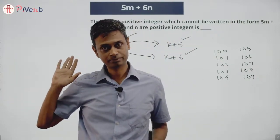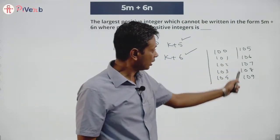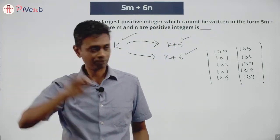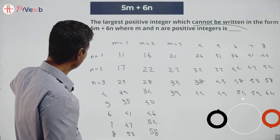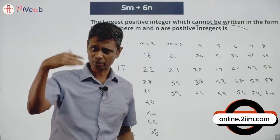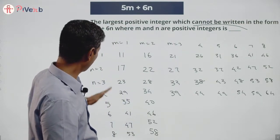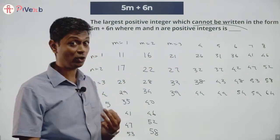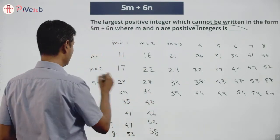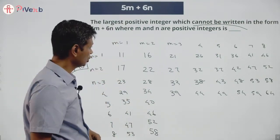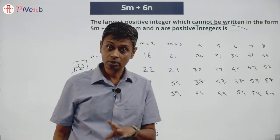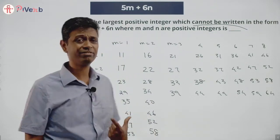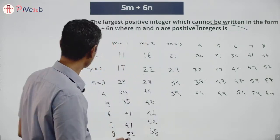The moment I have 5 consecutive achievable numbers, I'm through. So let me find those. After 11, the next achievable numbers are 16, 17. Numbers 12, 13, 14, 15 are not possible. Then 21, 22, 23 are possible — three in a row — but 20 is not possible. Then 24 is not possible, 25 is not possible. Note 25 = 5×5, but that requires n=0, which isn't a positive integer.